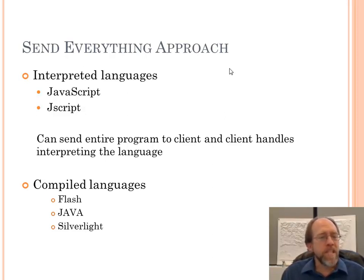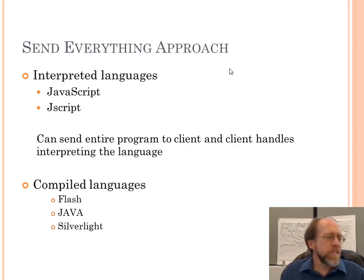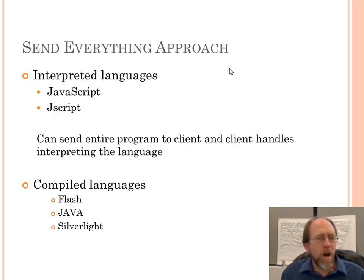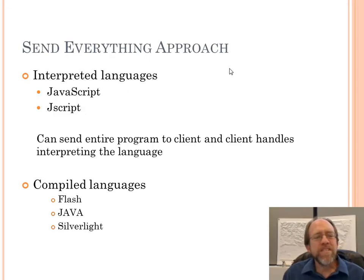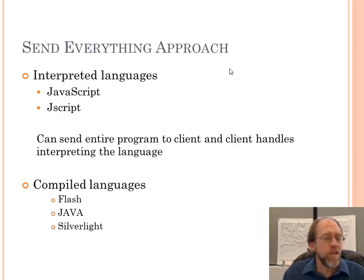There are other things that can be either compiled or pre-compiled, like Flash, Java, and Silverlight. Most browsers don't automatically handle Flash — they have a plugin sitting inside the browser that recognizes Flash code and knows what to do with it. It's still sending the stuff over to the browser, and the browser receives the information and has to do something with it. That's the send-everything approach.